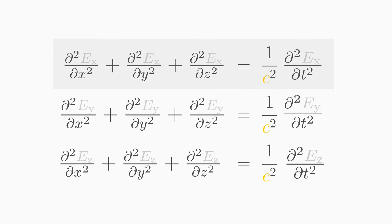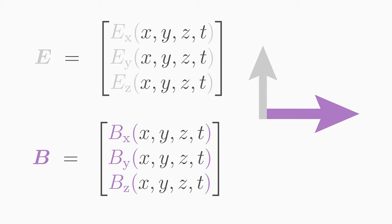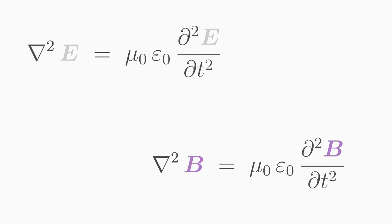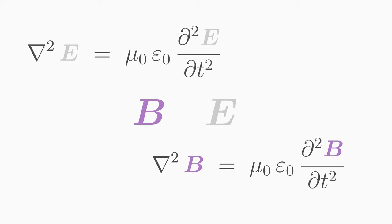If you solve the first differential equation, you find out how the first E field component changes in time and space. With all three components of the E field and the three components of the B field, you know the entire temporal and spatial behavior of the electromagnetic wave. The solution of the wave equation is a wave, but not necessarily an electromagnetic wave — the solution must also fulfill all of Maxwell's equations in vacuum.